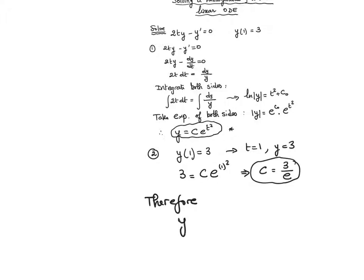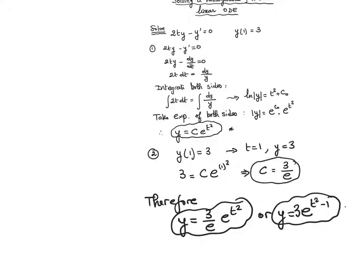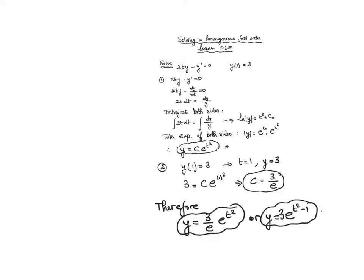We can write it like this, or we could write this as 3e^(t² - 1). This form also is fine.